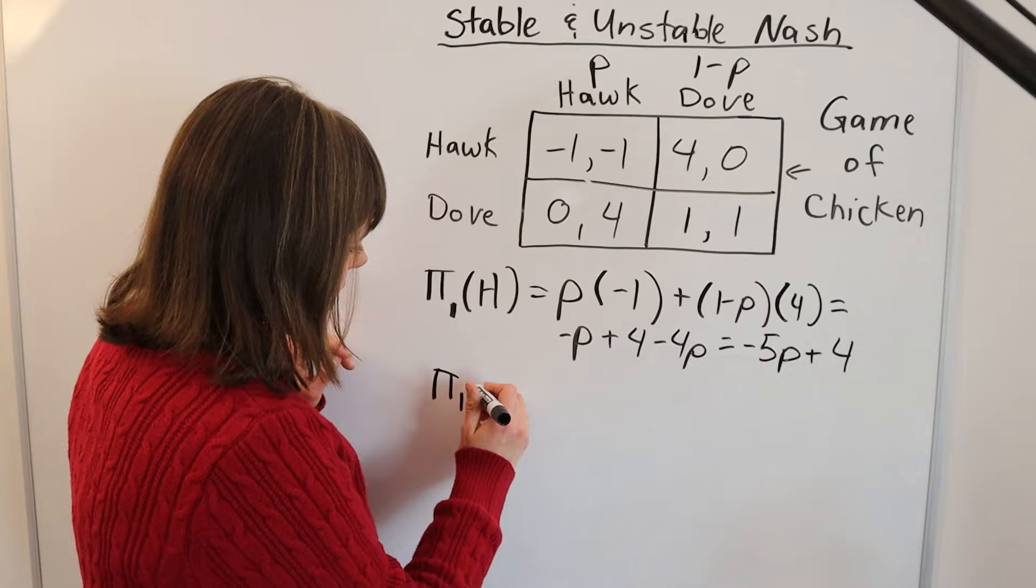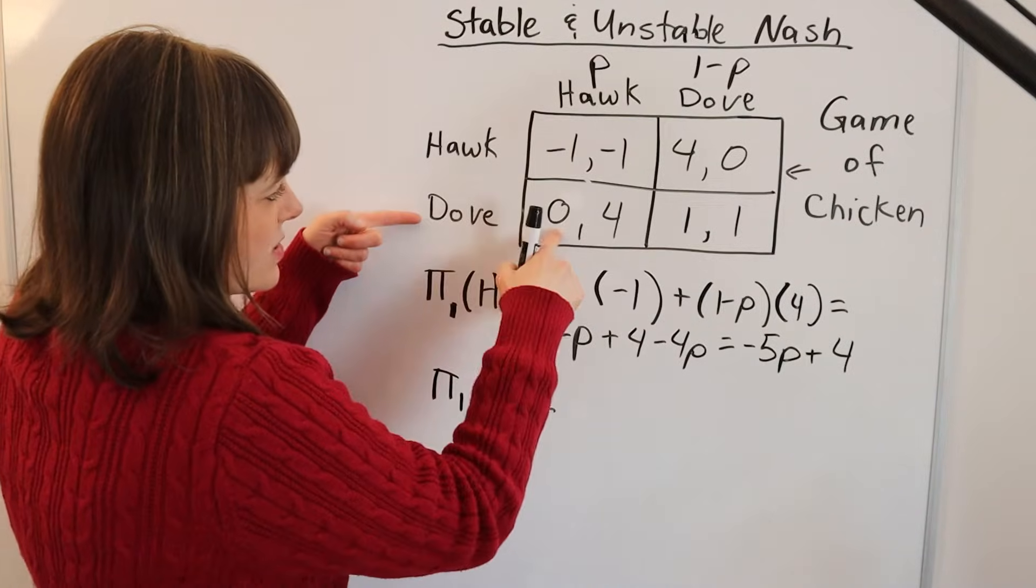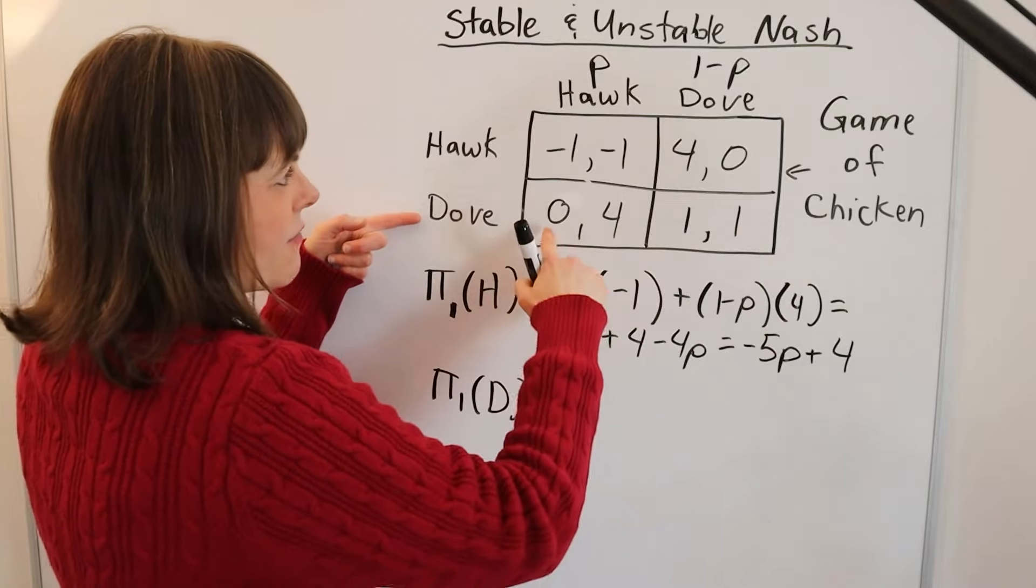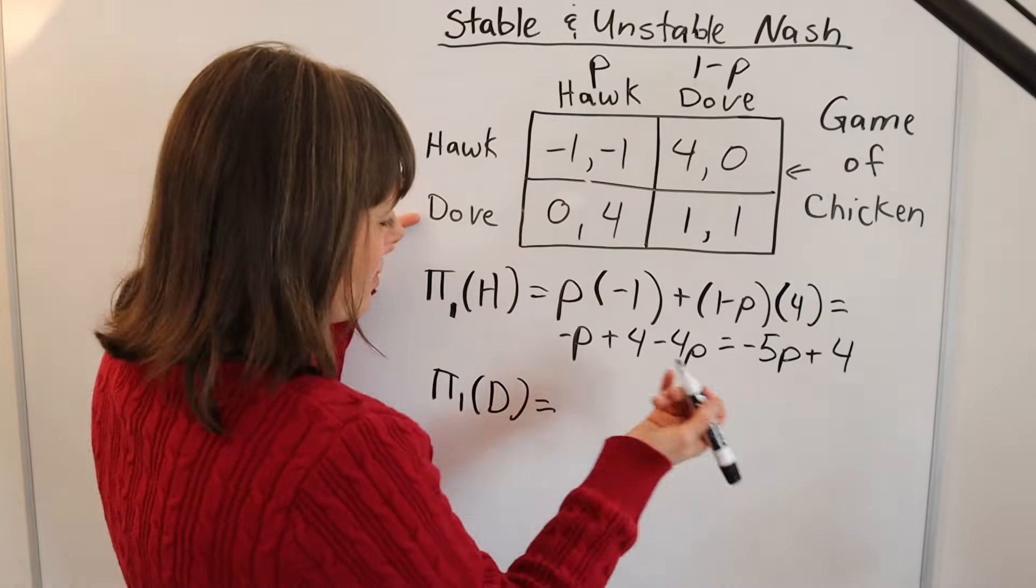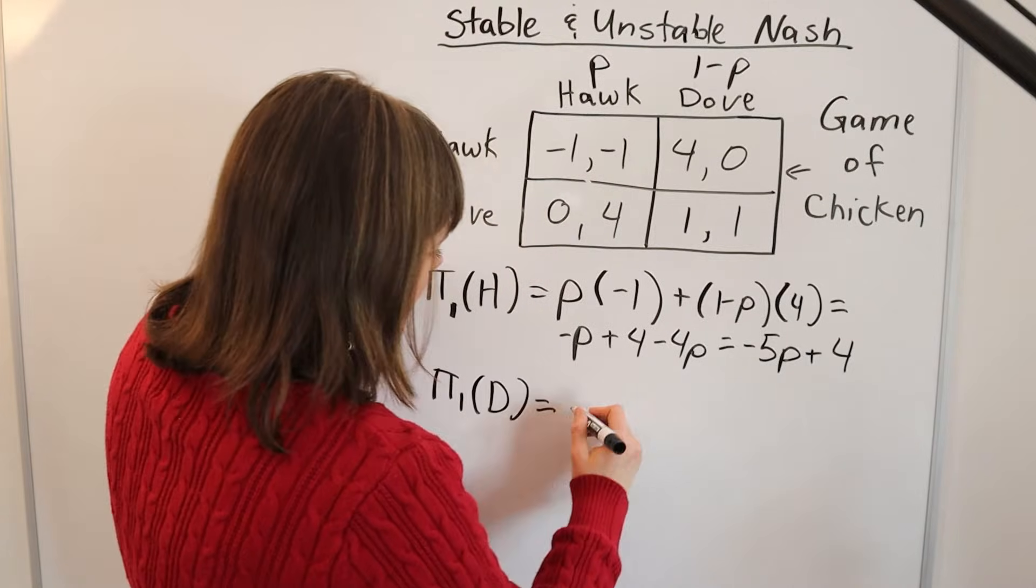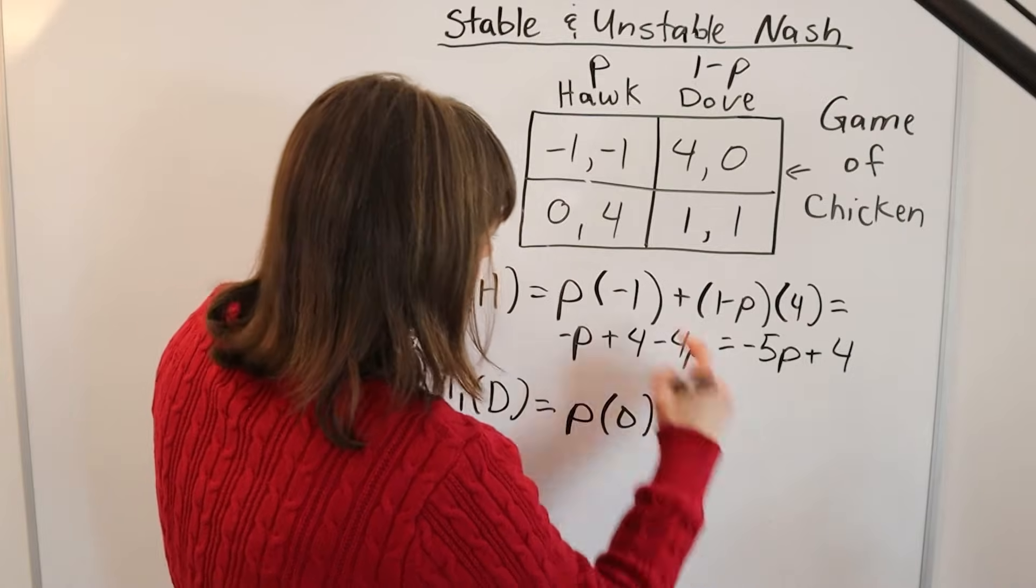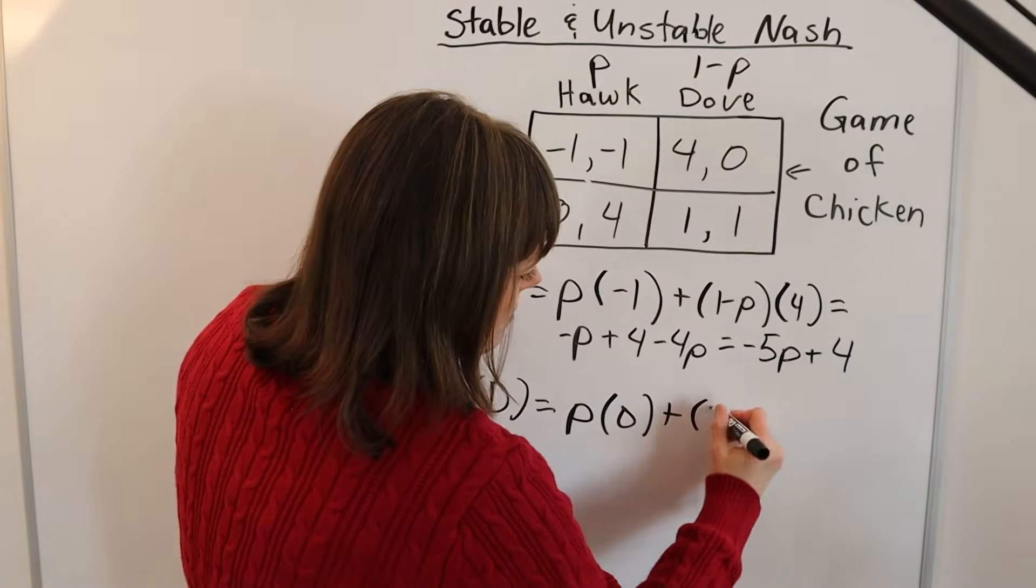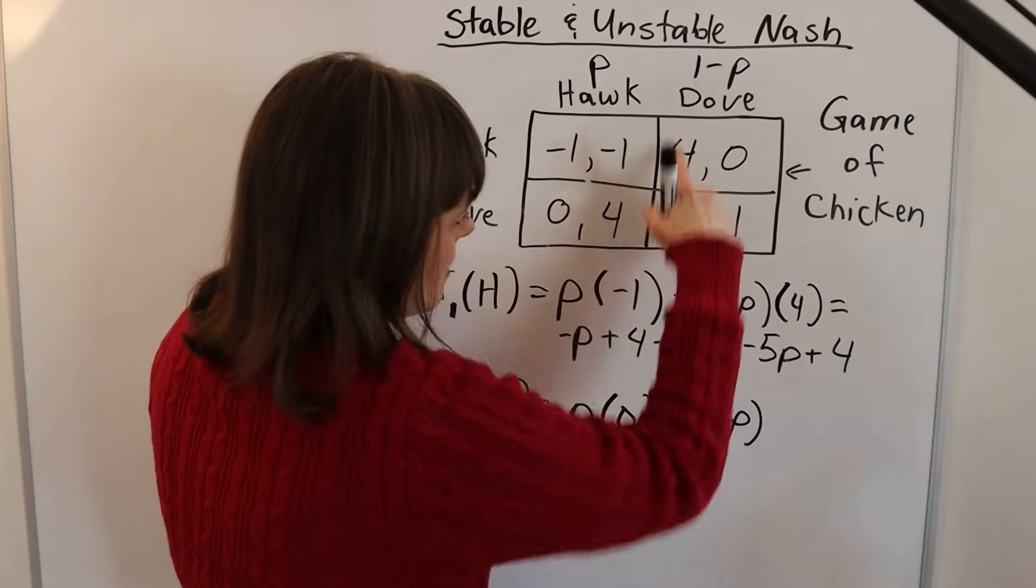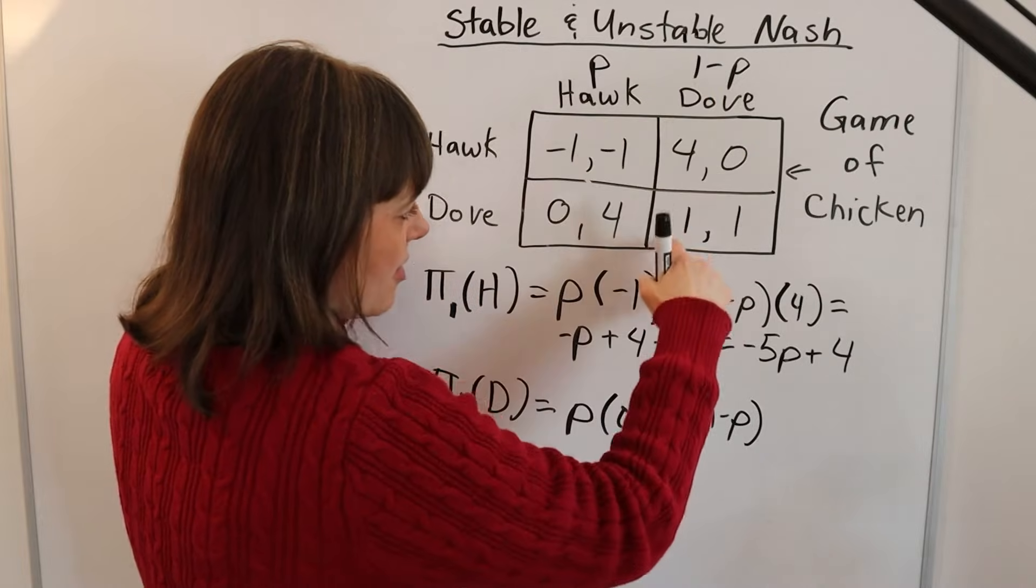Similarly, the payoff to player one of going Dove: if player one goes Dove, the expected payoff is the probability of encountering a Hawk times the payoff if you encounter a Hawk. That probability is P, the payoff if you encounter a Hawk is 0, plus the probability you encounter a Dove, which is 1-P, times the payoff from going Dove in that scenario, which is 1.